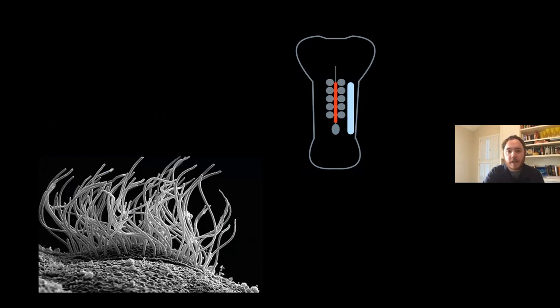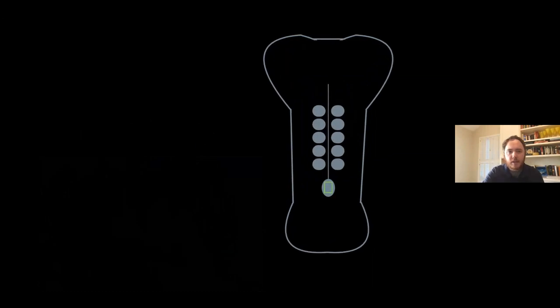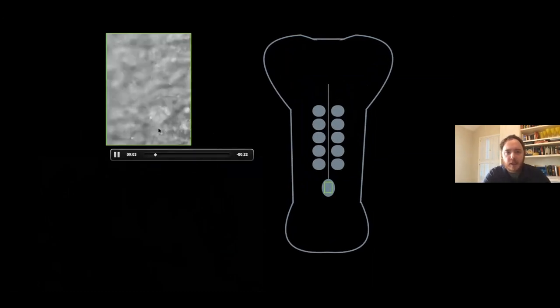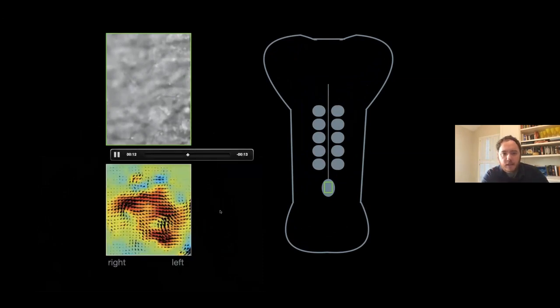The question is how is nodal initially activated on the left in the first place? That involves these organelles, cilia. Cilia are hair-like protrusions coming out of the surface of cells. Most of our cells have cilia, but a small subset are actually motile—they beat under their own force, generating fluid flows across surfaces of cells, tissues, and down tubes.